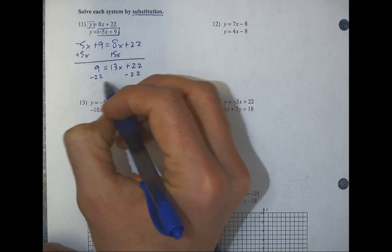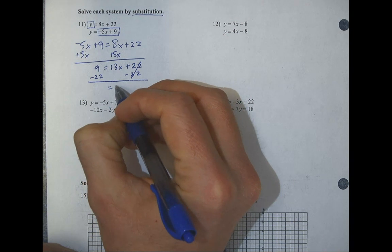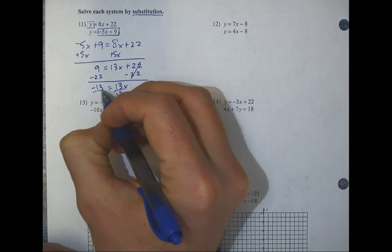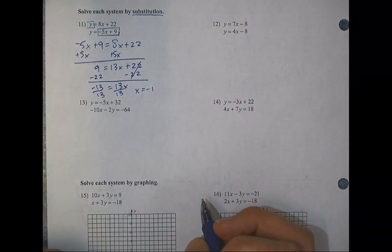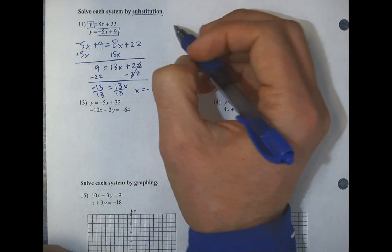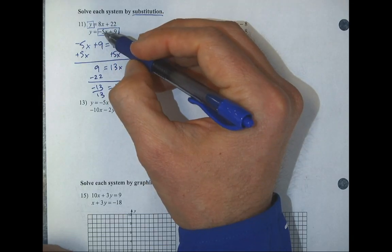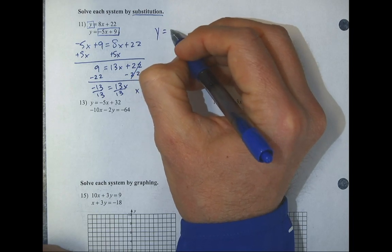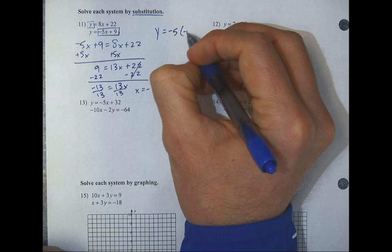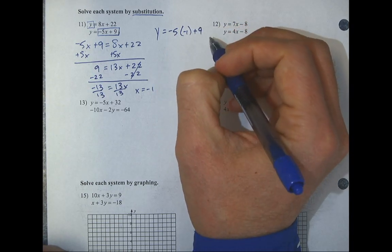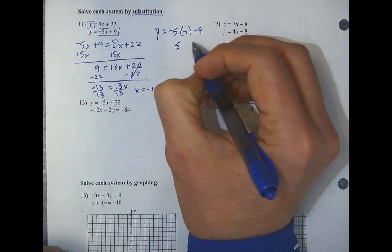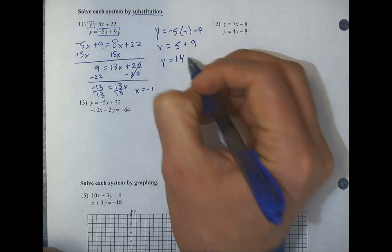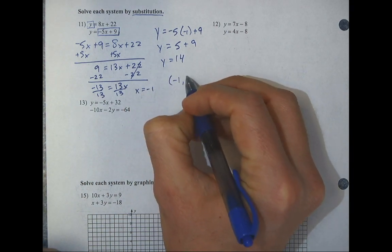Substituting: negative 5x plus 9 replaces y, giving negative 5x plus 9 equals 8x plus 22. There's an x on both sides, so I add 5x to cancel the negative 5x, leaving 9 equals 13x plus 22. Subtracting 22 gives negative 13, and dividing by positive 13 gives x equals negative 1. Plugging negative 1 back in: negative 5 times negative 1 plus 9 gives positive 5 plus 9 equals 14. Final answer: (−1, 14).